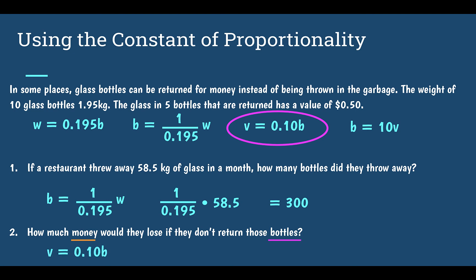Now I know how many bottles — B was equal to 300. Multiply that by 10 cents. They would lose $30 by not returning those bottles.